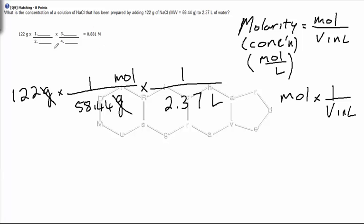Now the number of significant figures here. There's three sig figs here, three sig figs here. So the answer is going to come out to three sig figs as well. That's 0.881 big M, or if you'd like, 0.881 moles per litre.